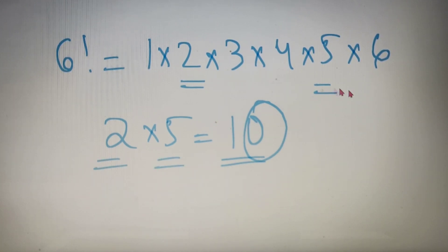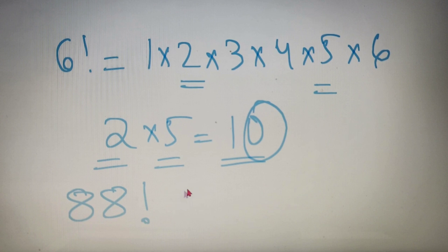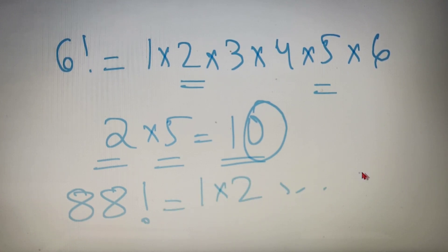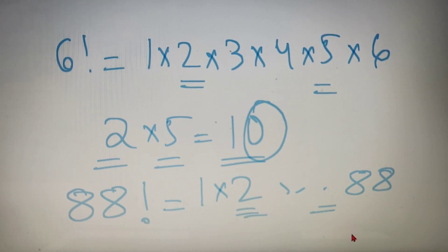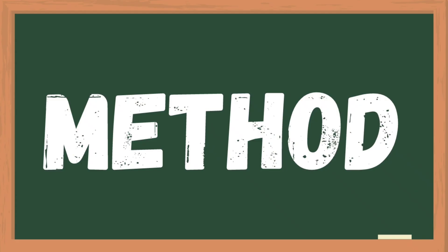So that was a pretty simple case. Now if I tell you to find out the number of zeros at the end of 88 factorial, it is not easy to write down all the numbers from 1 up to 88 and calculate the number of 2s and the number of 5s. So let's learn the method for finding out the number of zeros at the end of any factorial value.